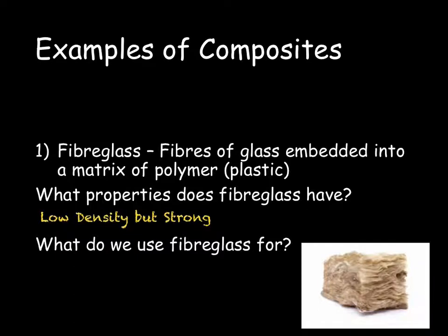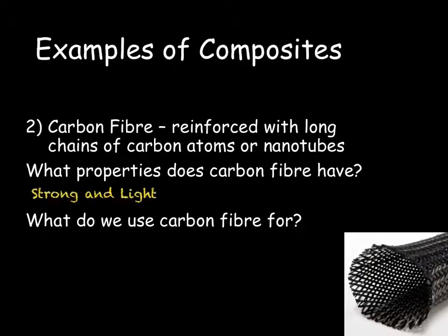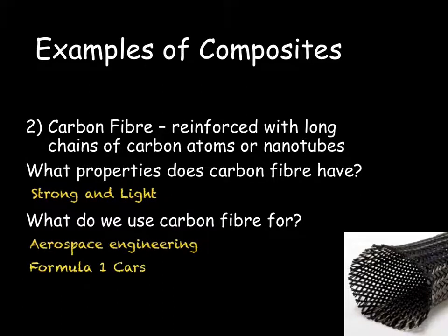Fibreglass can also be used for insulation as it can trap air between the layers, so you may have fibreglass insulation in your loft. A second example of a composite is carbon fibre, a very highly used material. This is made by reinforcing long chains of carbon atoms or nanotubes. These composites are very, very strong and light. Due to this, they tend to be used in aerospace engineering, in the manufacture of Formula One cars, and in lots of high-end gadgets, for example mobile phones.